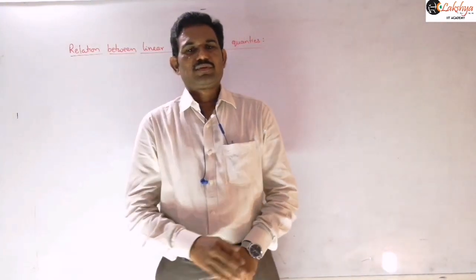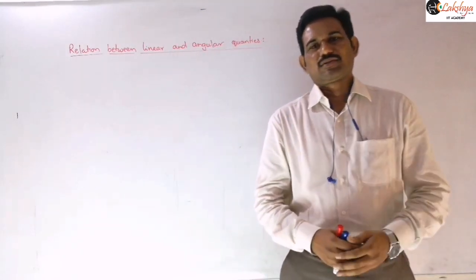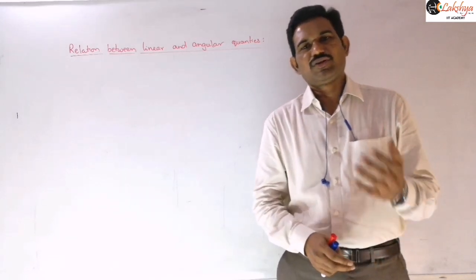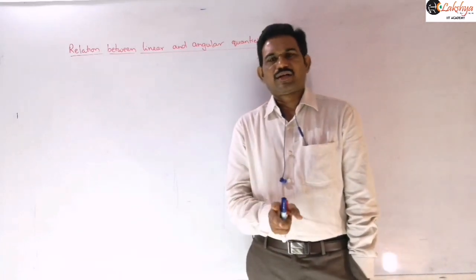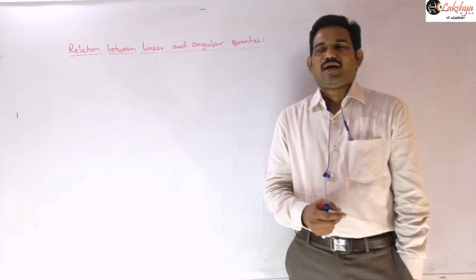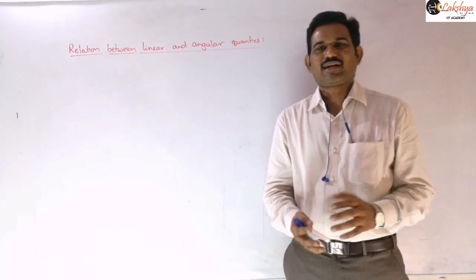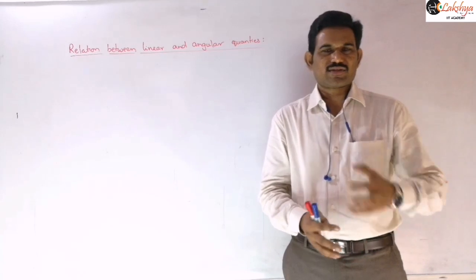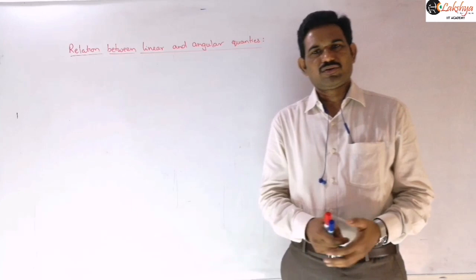Good morning everyone. In the last class we discussed about relative angular velocity — when a particle is in linear motion, how to define angular velocity with respect to a particular observer, and when both the observer and particle are moving, how to define relative angular velocity. In today's class, let us see the basic relations between linear and angular quantities, then define the types of accelerations and net acceleration in circular motion, including uniform and non-uniform circular motion.